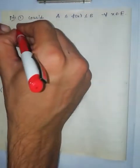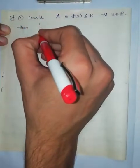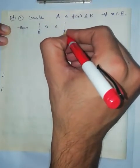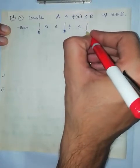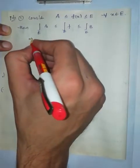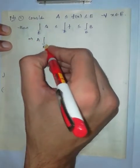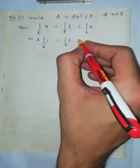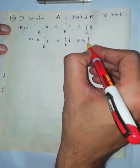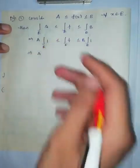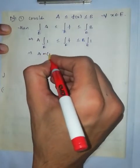Then the Lebesgue integral over E of a is less than or equal to the Lebesgue integral over E of f, which is less than or equal to the Lebesgue integral over E of b. Since a is a constant, we can take it outside: a times the Lebesgue integral over E of 1 ≤ Lebesgue integral over E of f ≤ b times the Lebesgue integral over E of 1. This implies a times the Lebesgue integral over E of the function 1 is the measure of E.